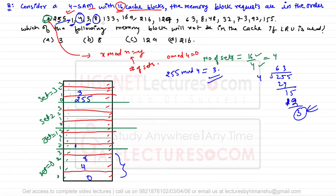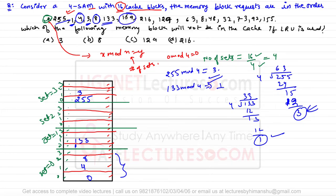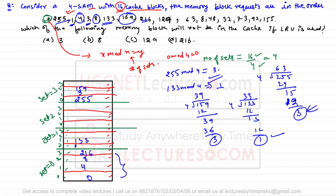Block 133 mod 4 gives remainder 1, so 133 is placed in set number 1. Block 159 mod 4 gives remainder 3, so 159 is placed in set number 3. Block 216 is completely divisible by 4, so it goes in set number 0. Block 129 mod 4 gives remainder 1, placed in set number 1. Block 63 mod 4 gives remainder 3, placed in set number 3. Next, block 8 maps to set number 0 and is already there — this is a hit.